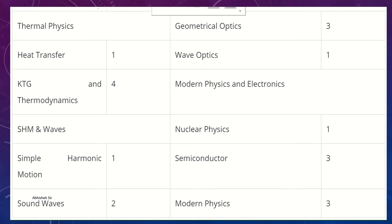This is class 11th and this is class 12th. Thermal physics with 1 question, heat transfer with 1 question, KTG and thermodynamics with 4 questions, SHM and wave with 1 question, and sound and wave with 2 questions. This is class 12th. Geometrical optics with 3 questions, wave optics with 1 question, modern physics with 1 question, nuclear physics with 1 question, semiconductor with 3 questions, and modern physics with 3 questions.